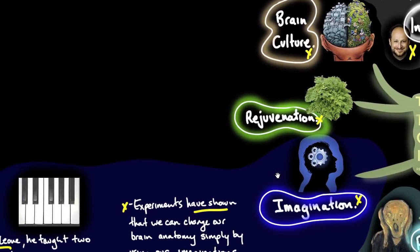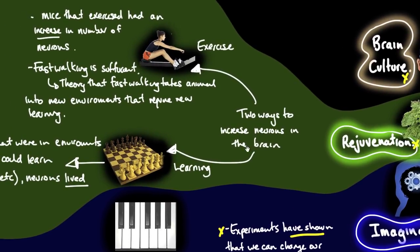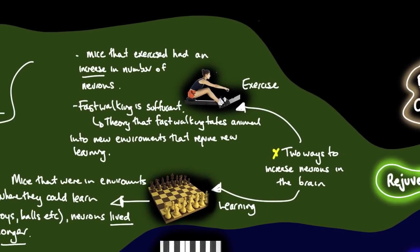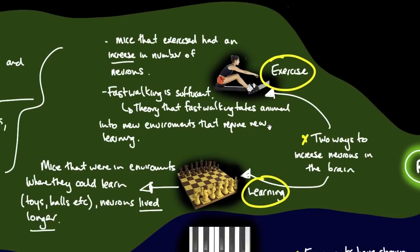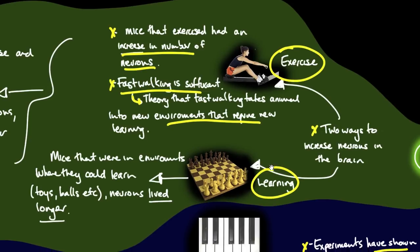Let's look at rejuvenation. There are two main ways to increase neurons in the brain. Neurons being the basic building block of the brain, via exercise or learning. Studies on mice showed that those that exercised had an increase in the number of neurons. They found the exercise doesn't have to be strenuous. Fast walking is sufficient. The theory is that fast walking used to take animals and us into new environments that required new learning. So exercise will create new neurons.